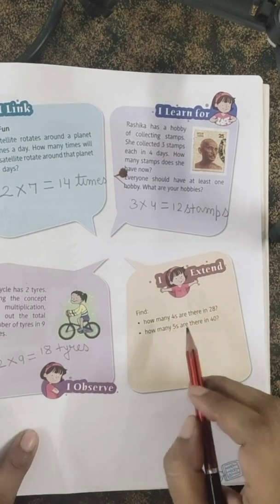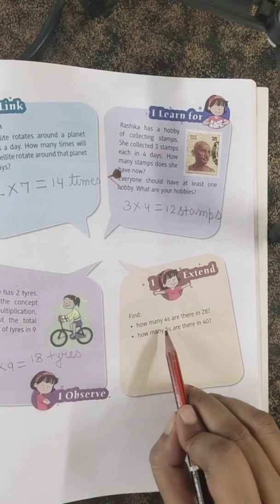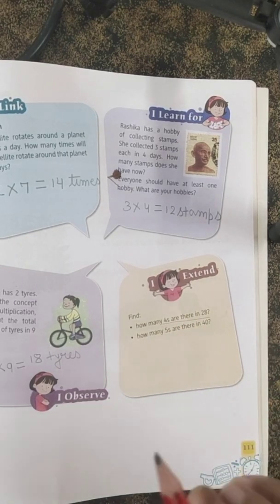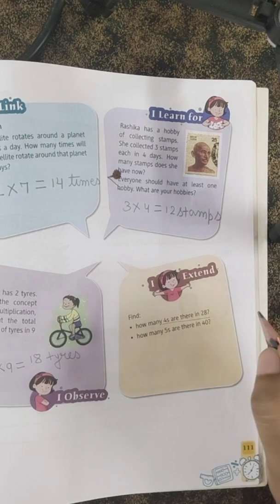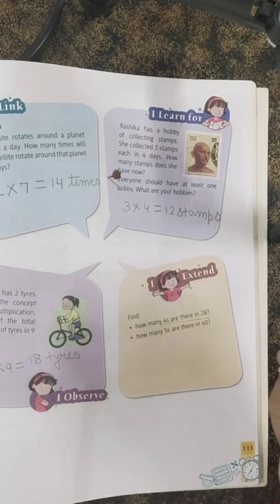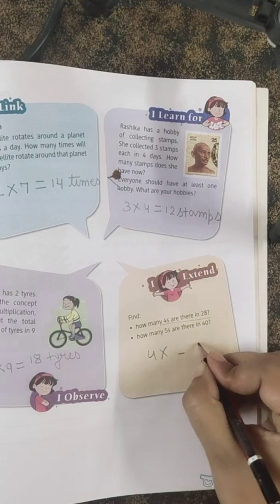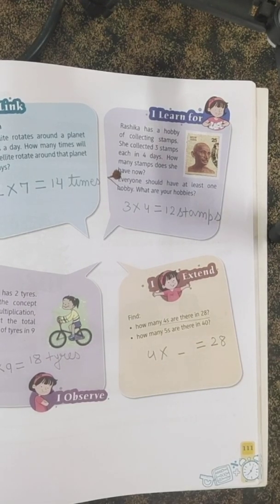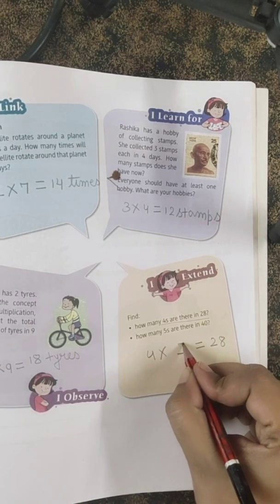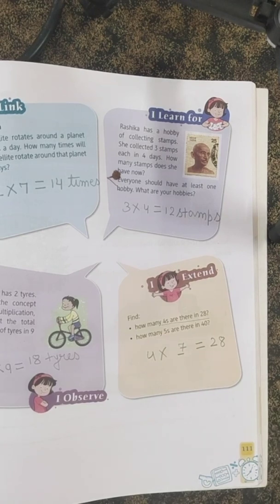The last question: Find how many 4s are there in 28. Let's say the table of 4: 4×1=4, 4×2=8, 4×3=12, 4×4=16, 4×5=20, 4×6=24, 4×7=28. So there are seven 4s in 28.